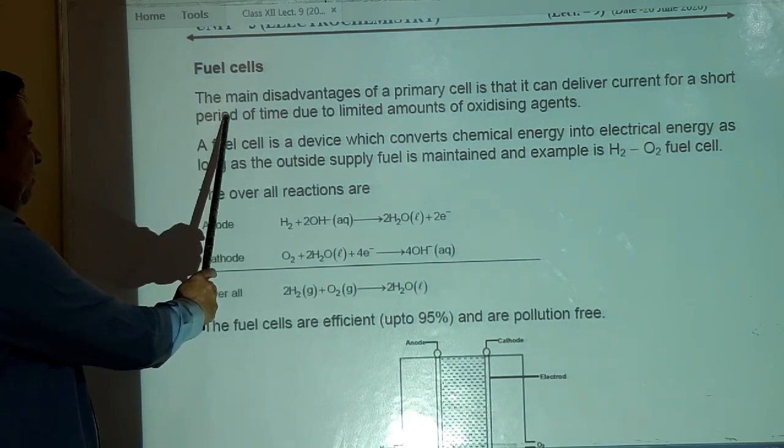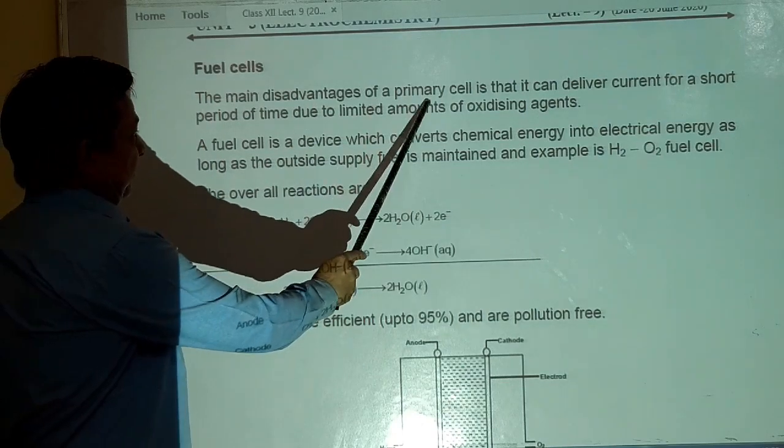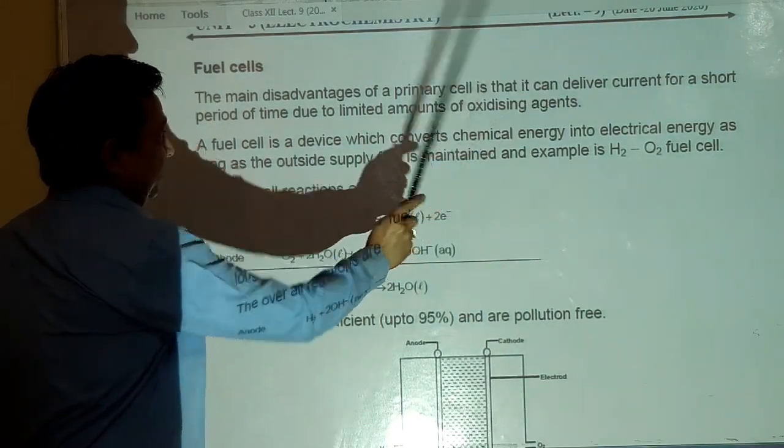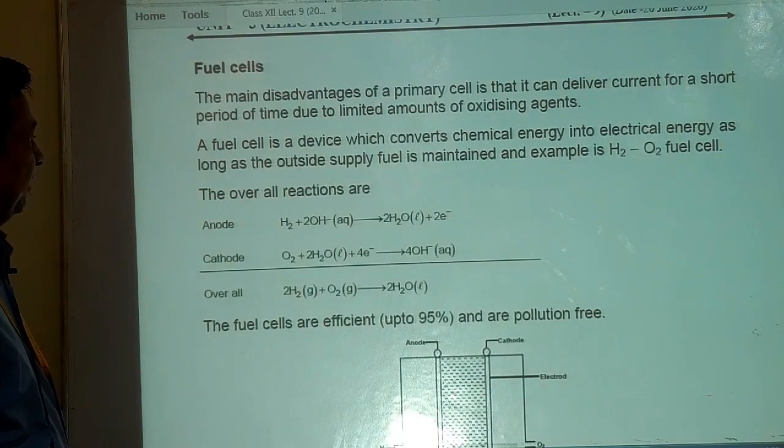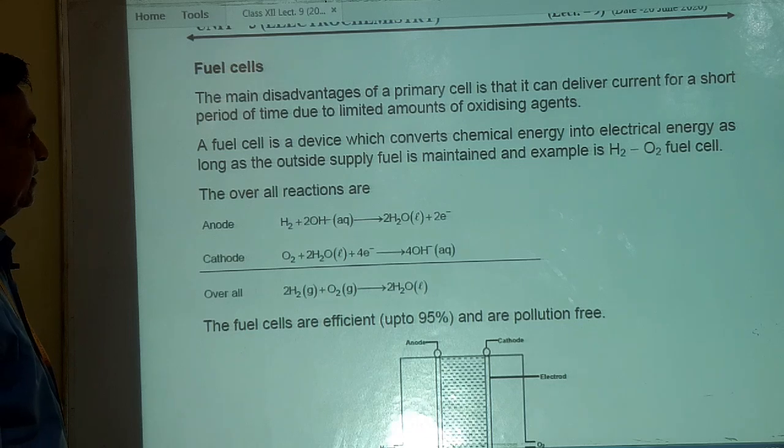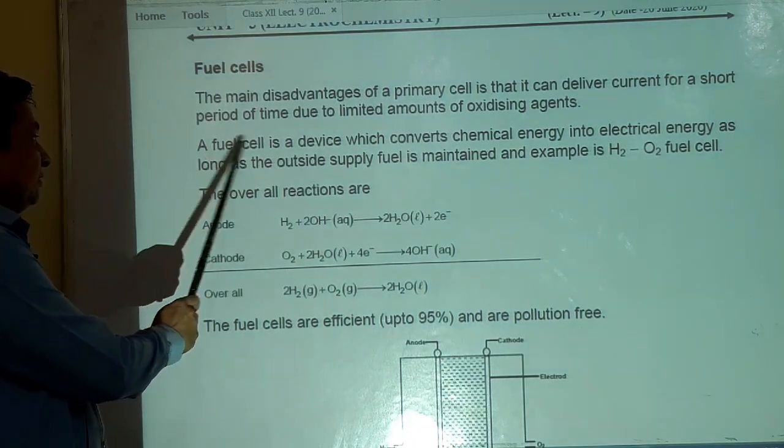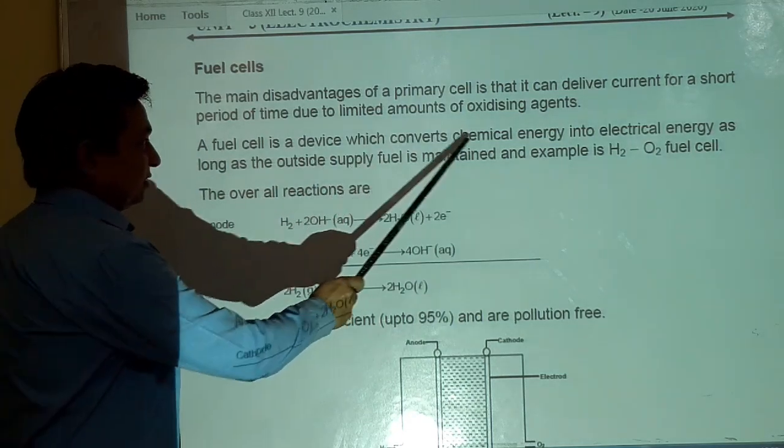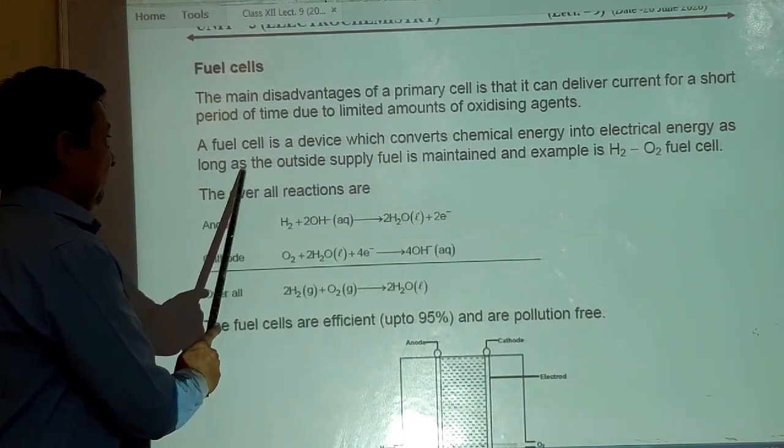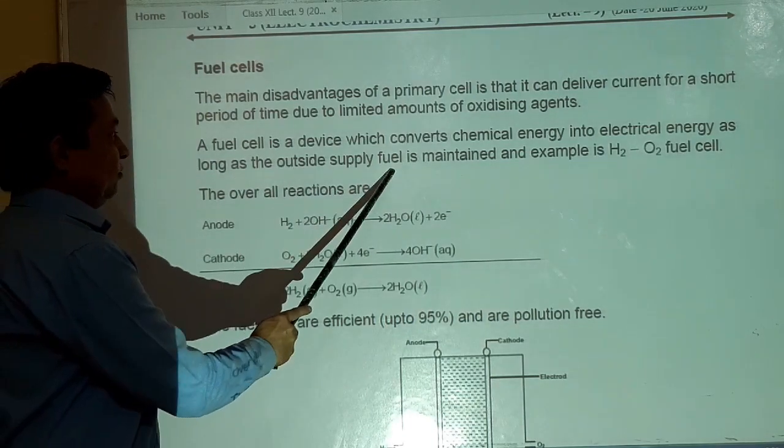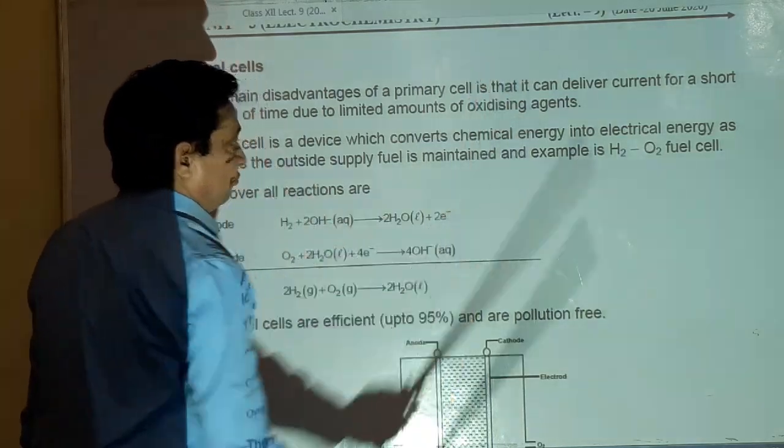The main disadvantage of a primary cell is that it can deliver current for a short period of time due to limited amounts of oxidizing agent. A fuel cell is a device which converts chemical energy into electrical energy as long as the outside supply fuel is maintained and example is H2-O2 fuel cell.